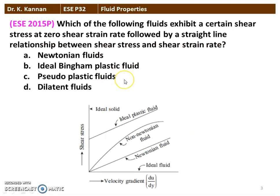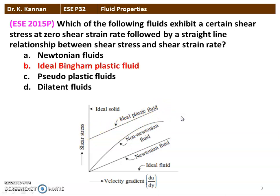Next question: which one of the following fluids exhibits a certain shear stress at zero shear strain rate, followed by a straight line relationship between shear stress and the shear strain rate? Looking at the diagram, at zero velocity gradient it has a certain shear stress, and then there is a linear relationship between shear stress and shear strain. So, the Ideal Plastic Fluid is the fluid which satisfies the condition given in the question.